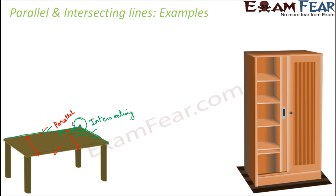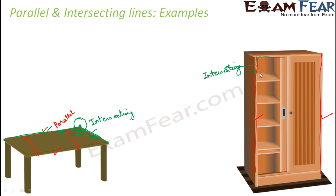In a similar way, let us look at the almirah or cupboard. If you look at the adjacent sides — this side and this side — they are intersecting lines because they tend to meet at a point. But when you look at the opposite sides, the distance between these two lines remains the same throughout. So the opposite sides of the cupboard are an example of parallel lines.